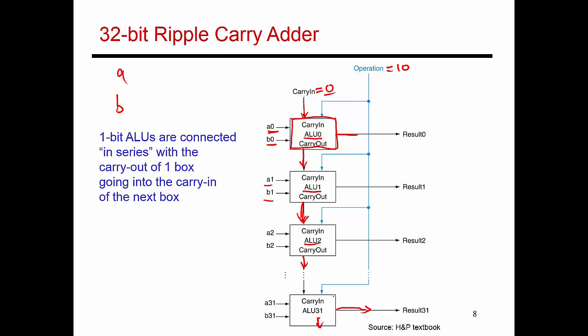If instead I give an operation code of 0,0, that means I'm doing a bitwise AND. Each ALU block takes its corresponding input bits — ALU 0 takes A0 and B0, does a bitwise AND, and produces bit 0 of the result. ALU 1, ALU 2, and so on all do their independent AND operations. There's no carry-out or exchange of information between the different ALUs when performing AND or OR. It's only addition that requires carries to be propagated from one ALU to the next. This is therefore referred to as a 32-bit ripple carry adder, because the carry ripples from ALU 0 all the way down to ALU 31.